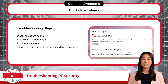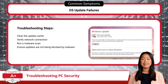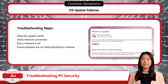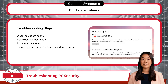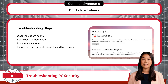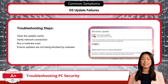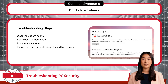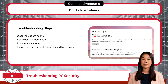Next, let's talk about OS update failures. An unpatched system isn't just inconvenient — it's a security risk. Failed updates can happen due to network issues, corrupted update files, or even malware interference. If you experience this type of failure, start by clearing the update cache to remove any corrupted files, and ensure the network connection is stable. Additionally, since some malware is designed to block updates intentionally to keep your system vulnerable, run a malware scan to ensure nothing is interfering with your ability to perform updates.